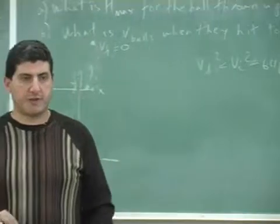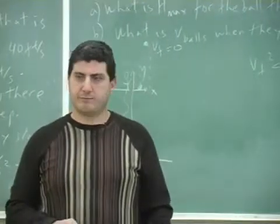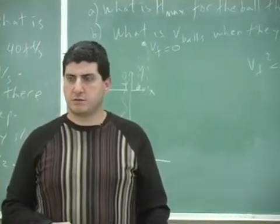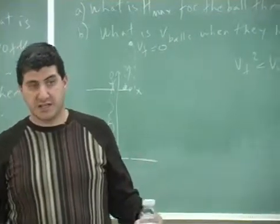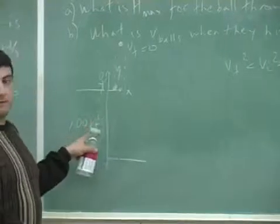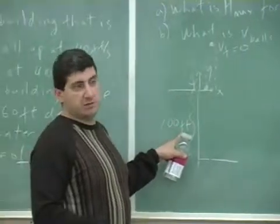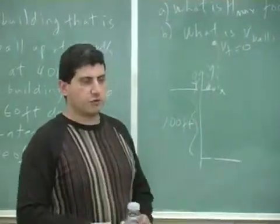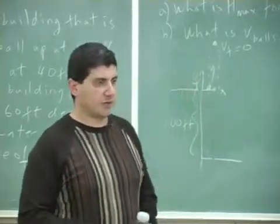The v final squared is v initial squared minus 64. Why minus 64? 2 times a, and a is negative 32, right? If I'm in the coordinate system of feet, then I have to do the British system. So I have to use negative 32.